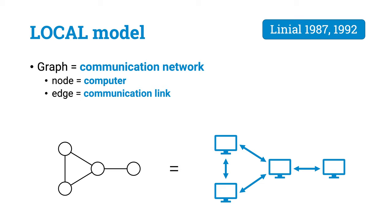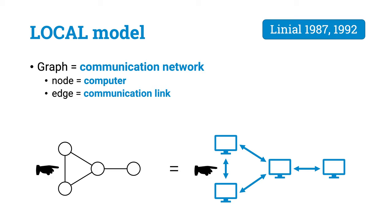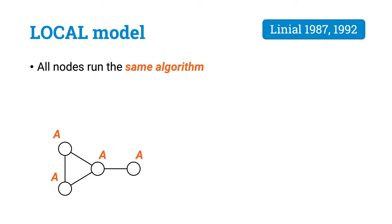This is one of the key questions that we want to understand in the theory of distributed computing: what computational problems can be solved in a small number of communication rounds, and what computational problems necessarily require a large number of communication rounds? This idea is formalized in a model of computing called the local model. This model was introduced in the late 1980s by Lineal, and it is delightfully simple and elegant.